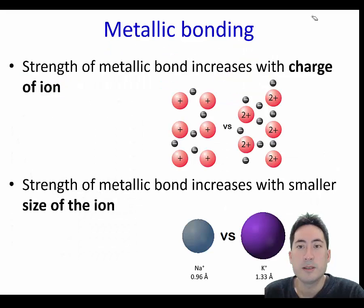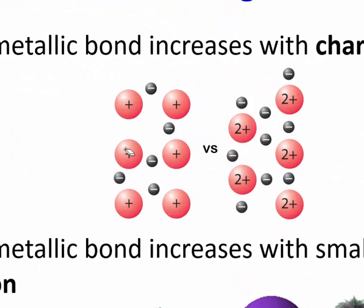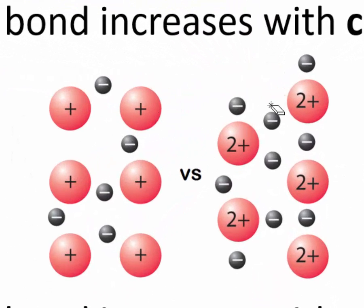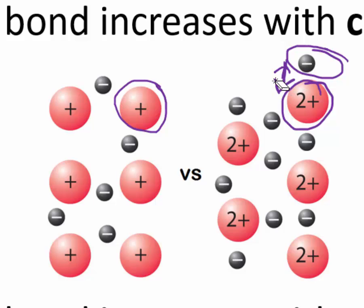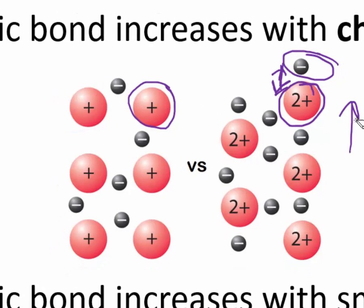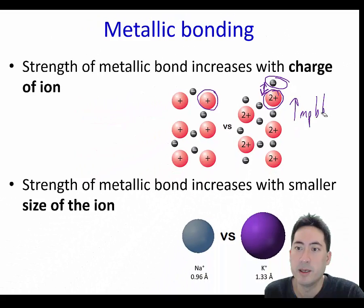What will increase the size of the metallic bond? If you look here, this cation has a greater charge than this one, so it will be more strongly attracted — there'll be a stronger attraction between the delocalized electrons and this particular cation rather than this one. So this one will have a higher melting point and boiling point.